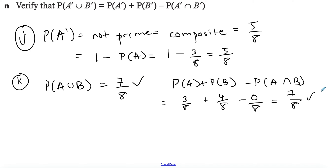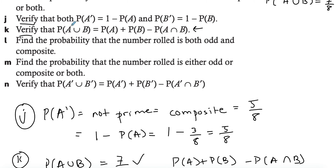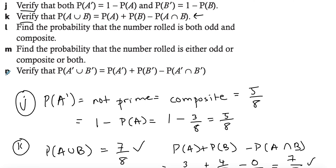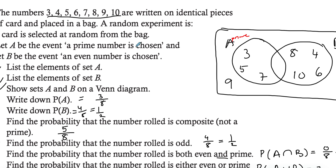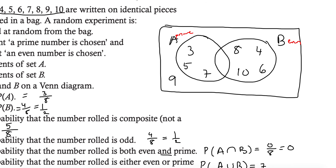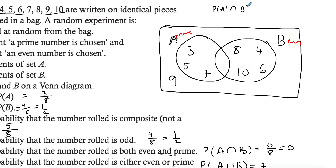To verify, use the answer you got and then apply the rule to show they are equal. For part L, find the probability that the number rolled is both odd and composite. Odd means not B, and composite means not A, and we need an intersection — so we're looking at A prime intersect B prime.